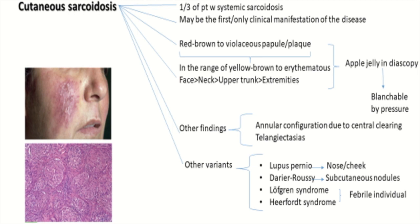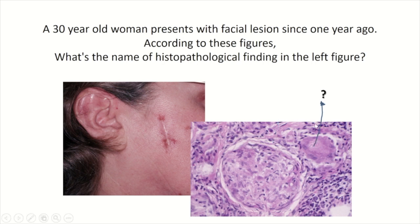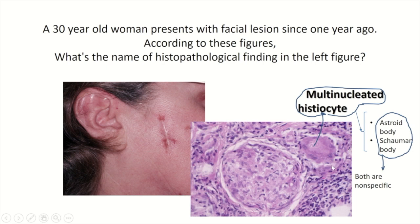The rest of the subject will be covered through clinical cases for better comprehension. The first case is a 55-year-old woman presenting with facial lesions since one year ago. Regarding the histopathology findings in the left figure: there is a non-specific lesion on the face, and here we have granuloma formation with a well-demarcated border — this is called the naked tubercle. In the right figure, there is a multinucleated histiocyte.